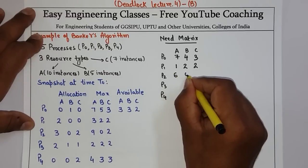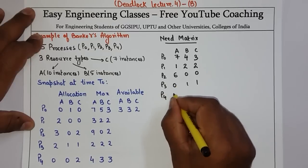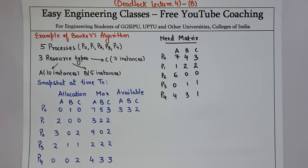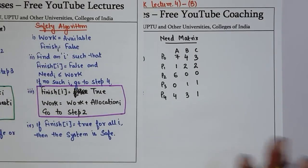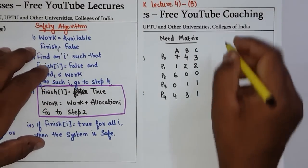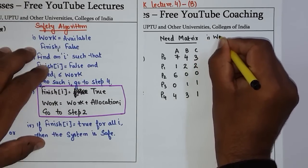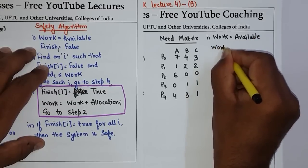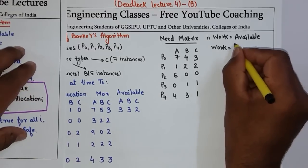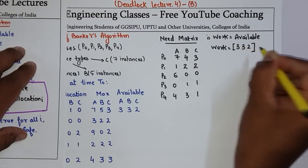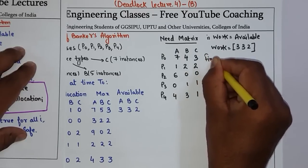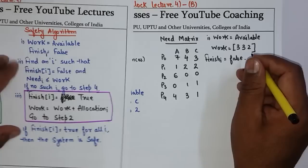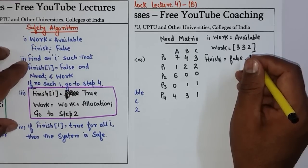Once you have drawn the Need Matrix, you need to apply the Safety Algorithm. The Safety Algorithm says: Work equals Available — the first step is to set Work equal to Available. Work will be 3, 3, and 2 as given in the question. Then set Finish[i] = false for all processes. We have covered the first two steps. Then we have to find an i such that Finish[i] is false and Need[i] is less than or equal to Work.